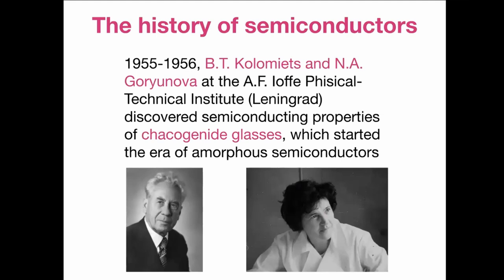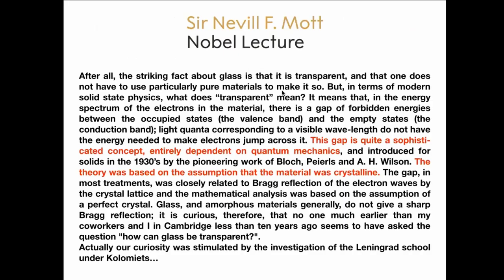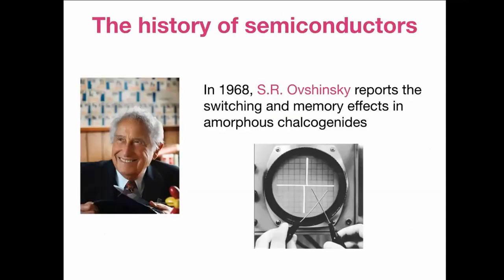In the 1950s, chalcogenides came back with the discovery of semiconducting properties of amorphous materials. This was unusual because traditionally the semiconducting gap is considered a result of periodicity in the material. In 1977, Mott received the Nobel Prize for theoretical work on amorphous semiconductors. In 1968, Ovshinsky reported switching and memory effects in amorphous chalcogenides.